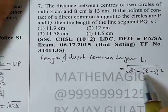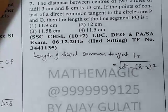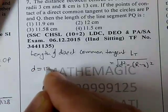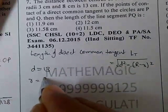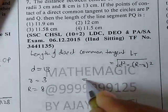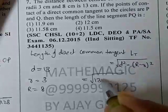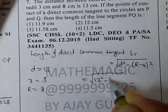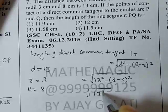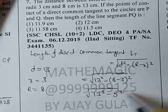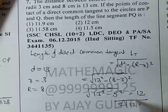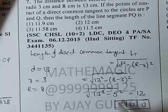PQ निकालना है — direct common tangent की length निकालना है। Formula है: √(d² - (R - r)²)। दोनों के बीच का distance है 13, r है 3, R है 8। तो यह होगा √(13² - (8-3)²) = √(13² - 5²) = √(169 - 25) = √144 = 12 cm। हमें पता है 5, 12, 13 का Pythagorean triple।